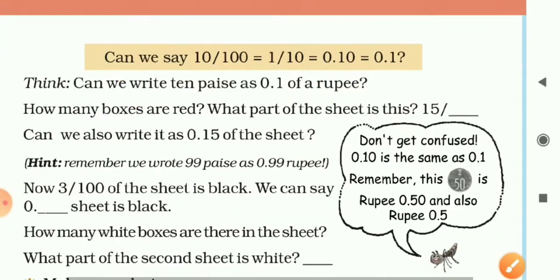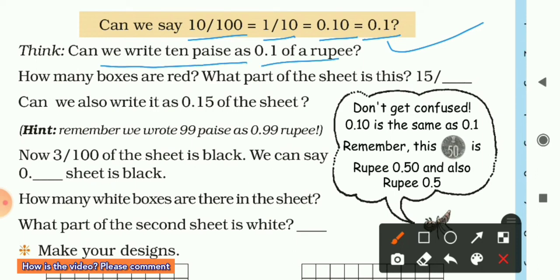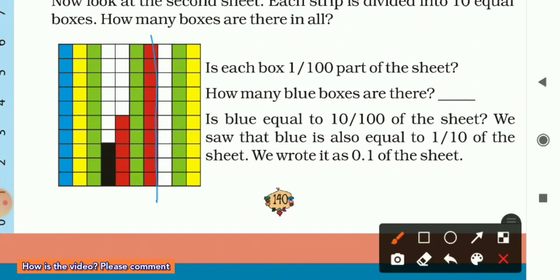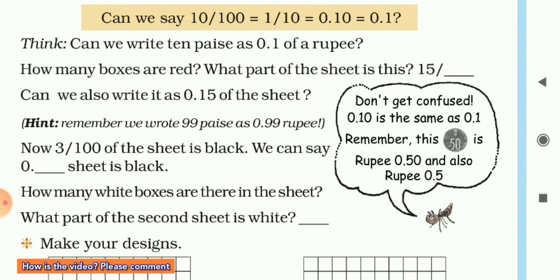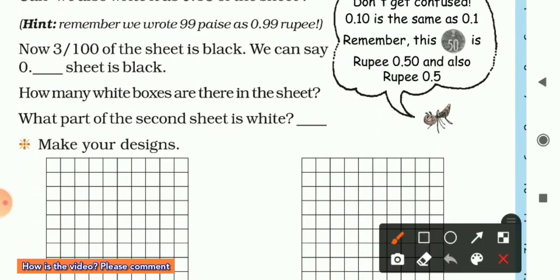So we can say 10/100 = 1/10 and 0.1 = 0.10 — already done. We can also write 10 paise as 0.1 rupee. Now how many boxes are red? Counting: 10, 11, 12, 13, 14, 15 — so 15 boxes are red. We write it as 15 upon 100, and in decimal form it is 0.15.